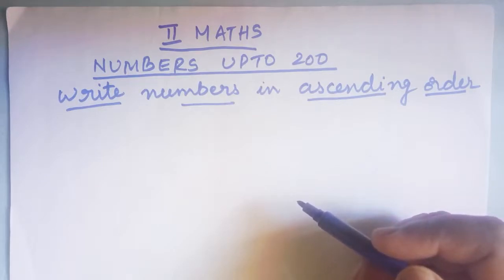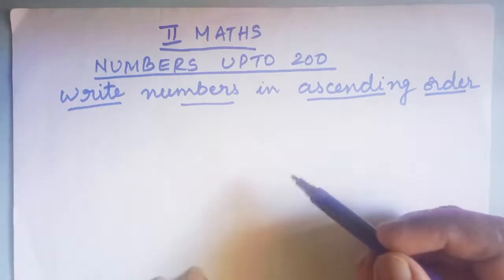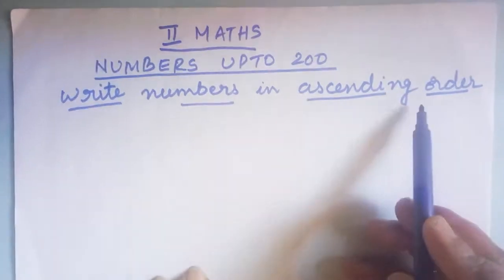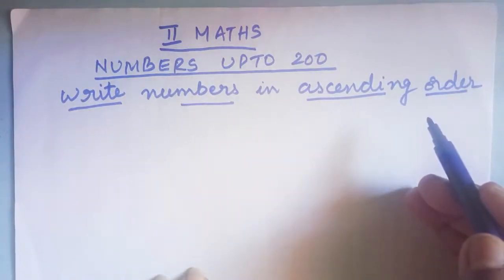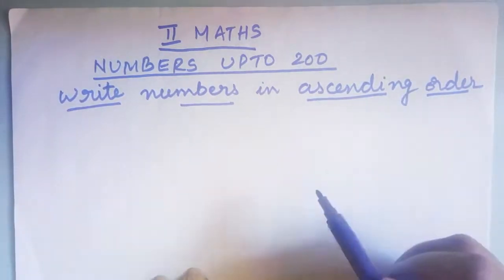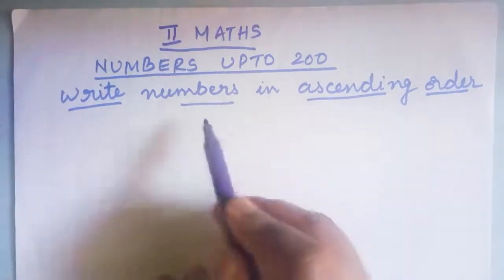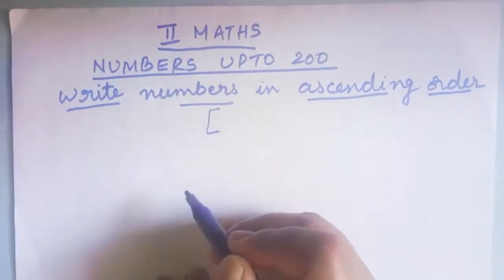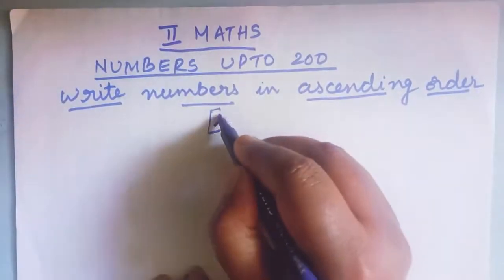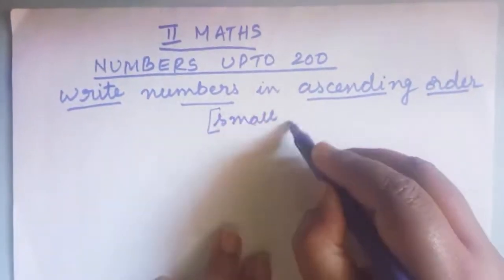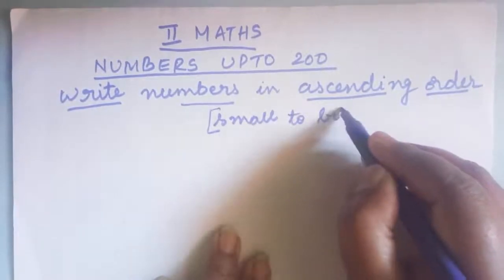So today we shall learn how to write numbers in ascending order. Children, ascending order means arranging the numbers from small to big, from the small number to the big number.